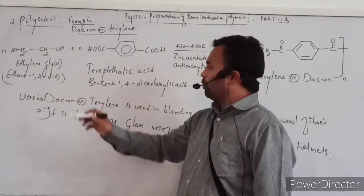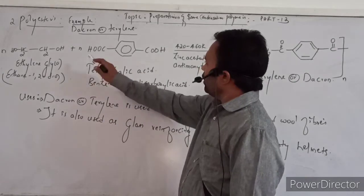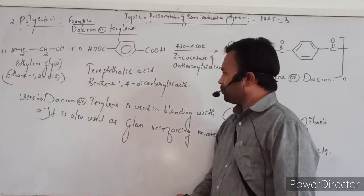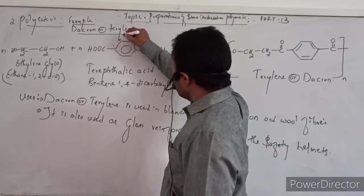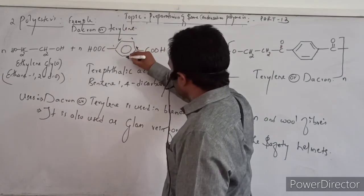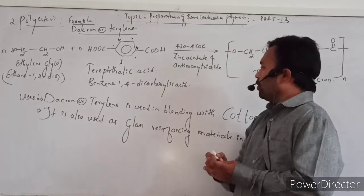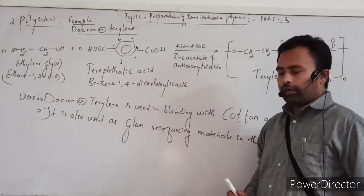Terephthalic acid - benzene-1,4-dicarboxylic acid, or it is also called terephthalic acid.